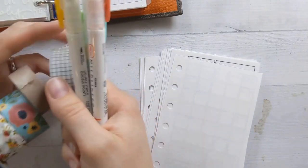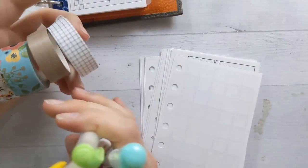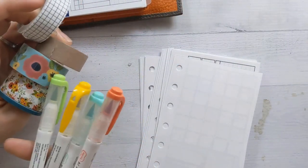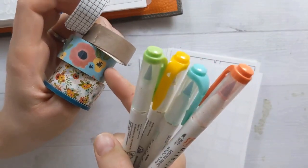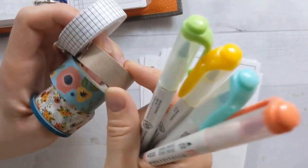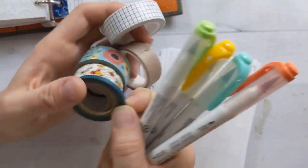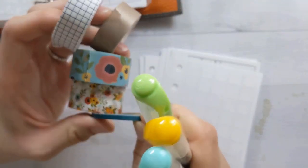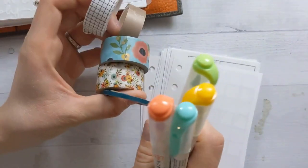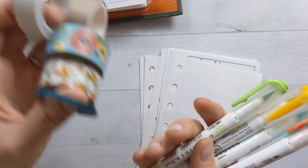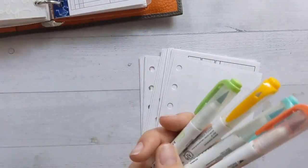So I went ahead and picked sort of a color theme for the month, which is not so much one color as a washi tape and some markers that sort of match it. These two go together, they're both from Michael's. I got these ones on Amazon and this is also from Michael's and it kind of matches. I might pull out my paper cutter and trim them because I've been doing that lately. You don't have to buy multiple widths of washi if you can trim it.